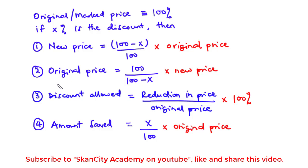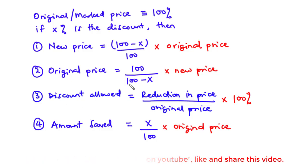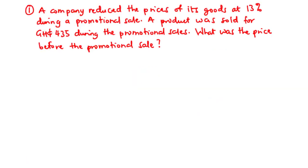So basically, this is how to find the new price, the original price, the discount allowed, and the amount saved. Now let's move on and solve some problems. For question 1: a company reduced the prices of its goods by 13 percent during a promotional sale. A product was sold for 435 Ghana cedis during the sale. What was the price before the promotional sale?